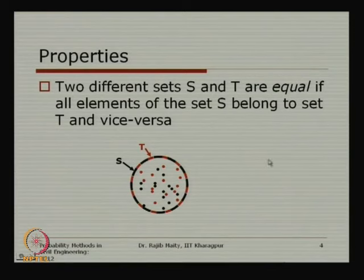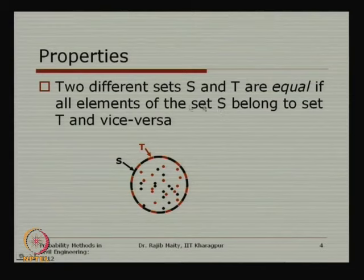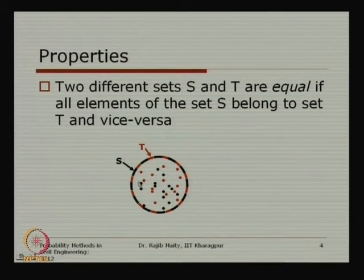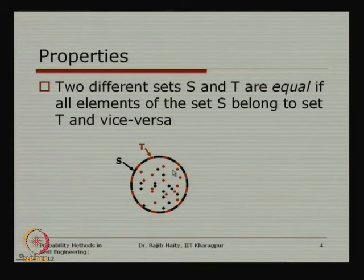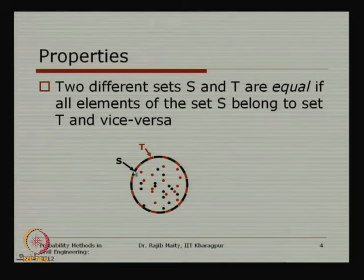There are different properties we will now see one after another. The first is when two sets are equal. Two sets are equal if all the elements of one set belong to the other set and vice versa. In the pictorial representation, there are two sets — one drawn by a red circle and another by a black circle. All the dots belong to both set S and set T, so we say set S and set T are equal.